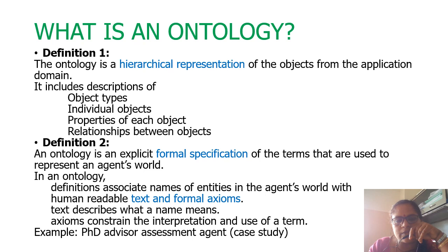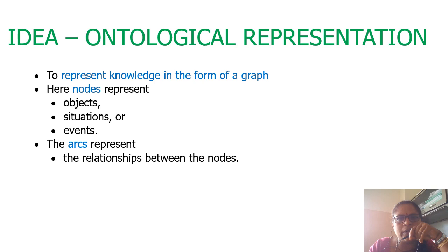The second definition of morphology is: it is a formal specification — an explicit formal specification — of the terms that are used to represent the agent's world. So in morphology, definitions associate the name of entities in the agent's world with human-readable text and formal axioms. Text describes the name, and axioms refer to the interpretation and use of the terms.